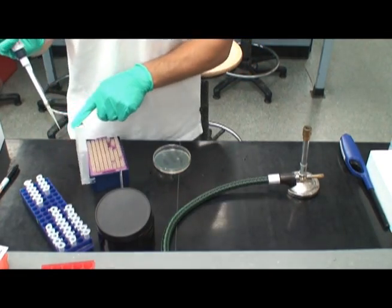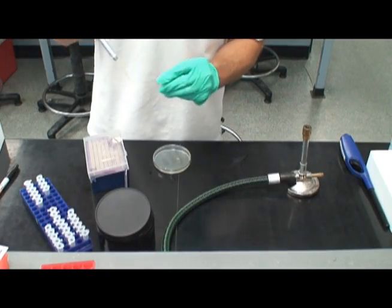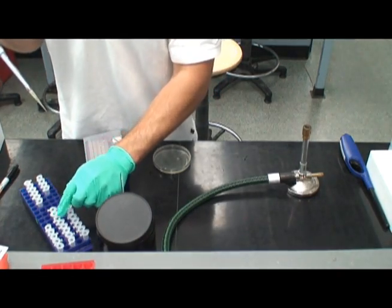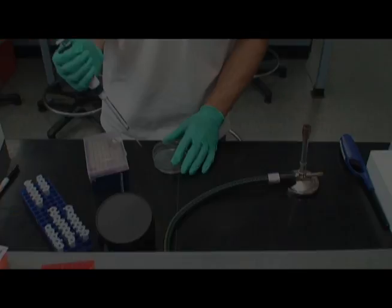To plate the dilutions, aseptically remove 0.1 milliliters from the tube using a micropipettor and a sterile tip and add to the associated dish.